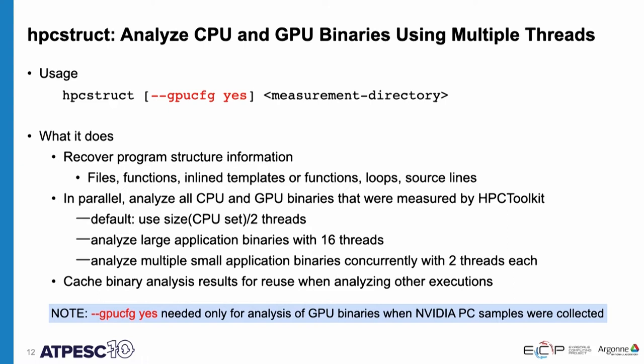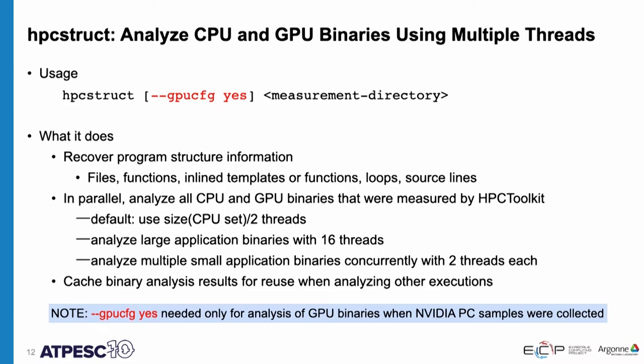There's one option — GPU CFG yes — for NVIDIA GPUs. It's an affirmative option because NVIDIA didn't provide an appropriate API and it's kind of expensive. You only need it if you're collecting instruction-level measurements with NVIDIA PC sampling. We have an option that says 'I used NVIDIA PC sampling, I want to turn this on,' and it'll take a little bit longer.